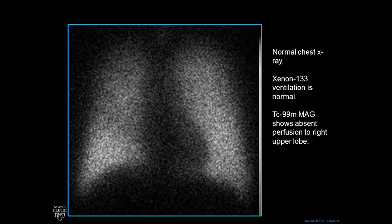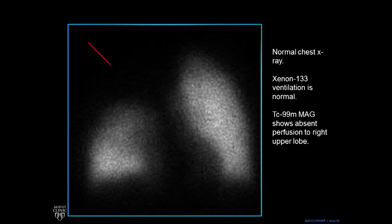Now we switch to a perfusion tracer. Again, we see the cardiac silhouette in the middle. We see the left lung is all taking up this perfusion tracer, showing where the blood flow goes. But on the right, we have a big empty area in the right upper lobe — there's no perfusion to the right upper lobe.